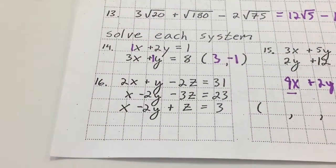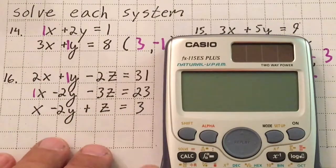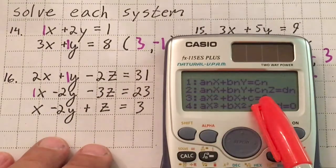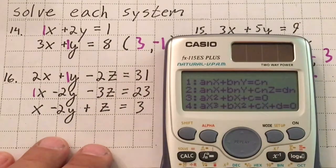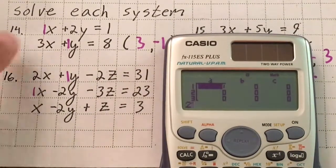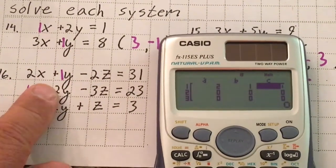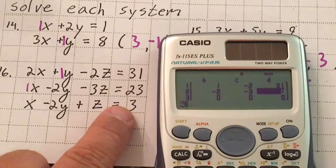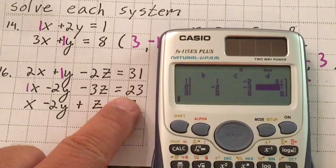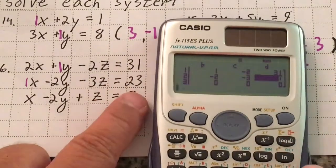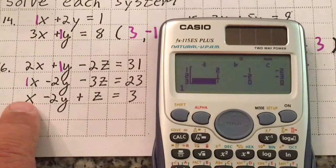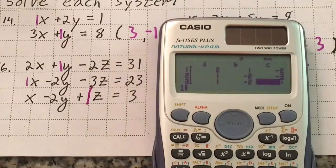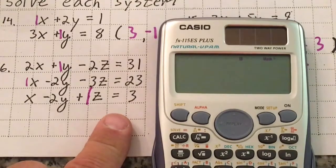For a three-variable system with x, y, and z, use mode 5, 2 — that gives ax + dy + cz = a number. An array of nine zeros appears. Enter coefficients 2, 1, negative 2, 31, then 1, negative 2, negative 3, 23, then 1, negative 2, 1, 3, hitting equals after each. The result gives x equals 10.